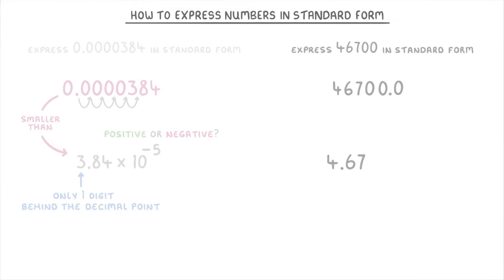So one, two, three, four places. So we now know that our standard form is going to be 4.67 times 10 to the power of either positive 4 or negative 4, and as 46,700 is bigger than 4.67, it's going to have to be the positive 4. So our final answer is 4.67 times 10 to the power of positive 4.